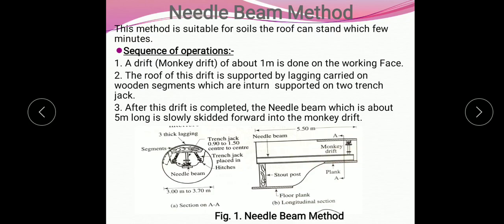The lagging is carried on wooden segments which are in turn supported on two trench jacks. Figure A, section on A, shows the wooden lagging. These are the wooden lagging used to support the roof of the tunnel, and this lagging is supported on two trench jacks.